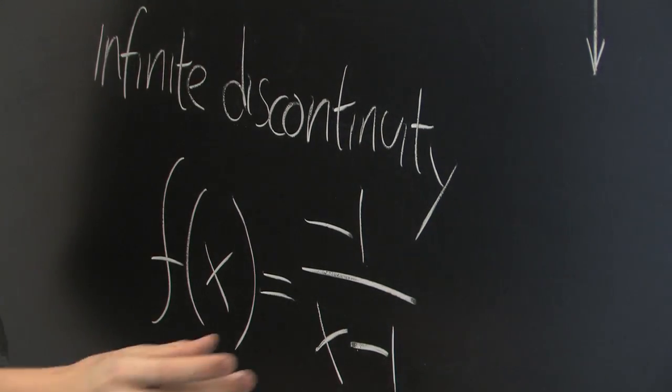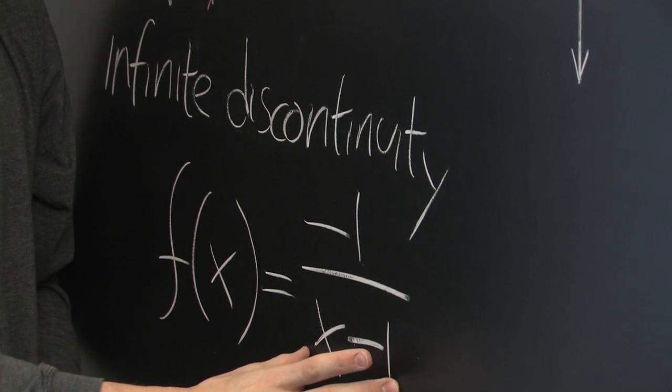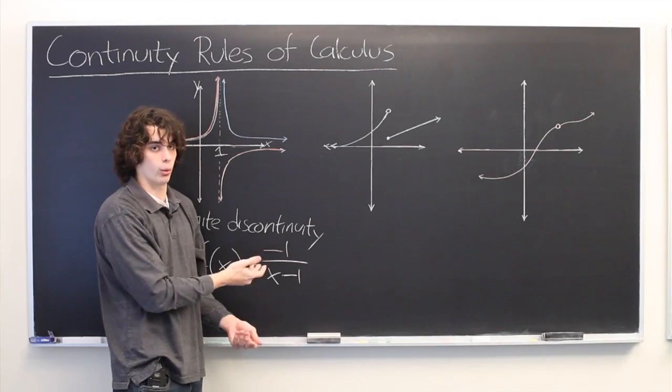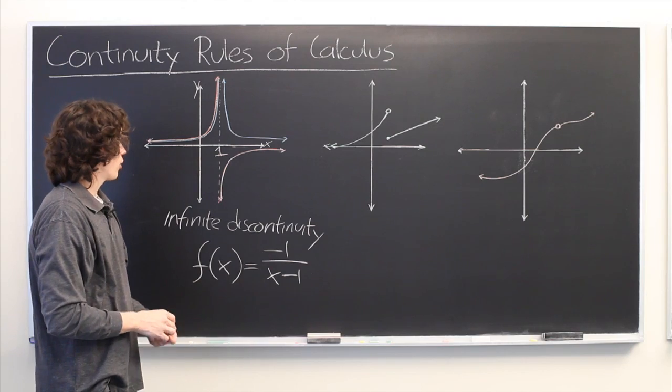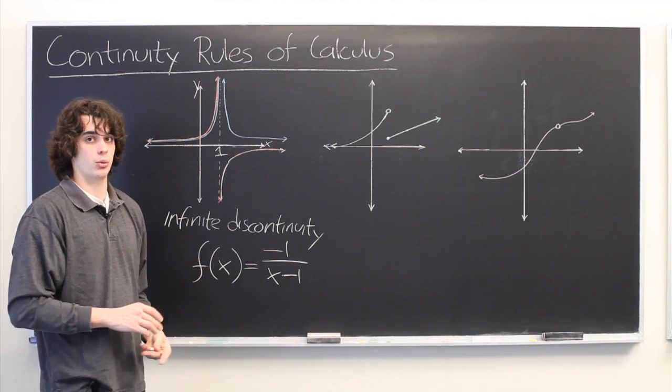So we see as x approaches 1, the denominator approaches 0. And anytime we have 1 over 0, or in this case negative 1 over 0, our function will approach one of the two infinities and become undefined at x equals 0.